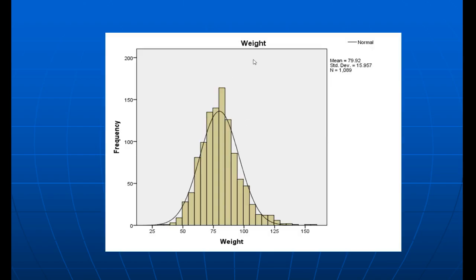This is an example of a typical histogram of normally distributed data — a very important curve. From this curve you can get a lot of information. You can see the mean is nearly 80, which is the weight in kilograms. The standard deviation is 15. The curve is bell-shaped. The X axis is weight and Y is frequency. You can see values at 50, 75, and 100.